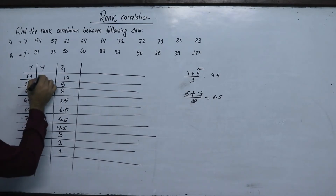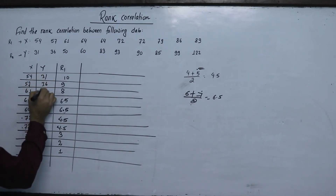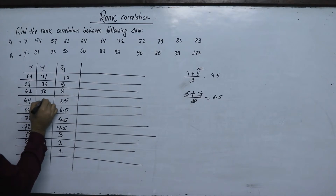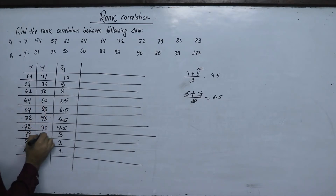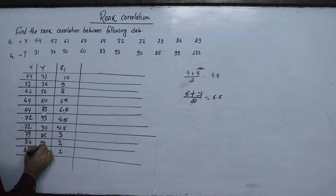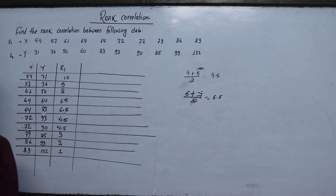The Y values are: 31, 36, 50, 60, 83, 93, 90, 85, 99, 22. We now assign ranks to each Y value.